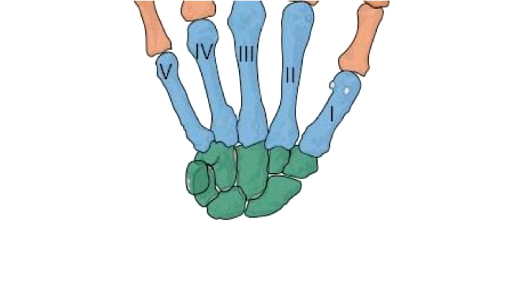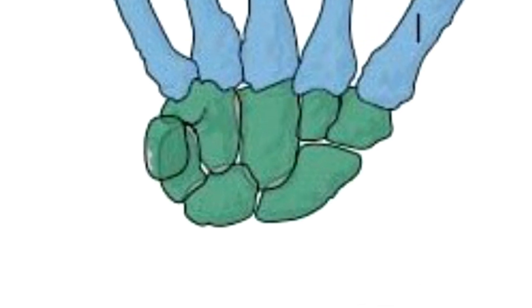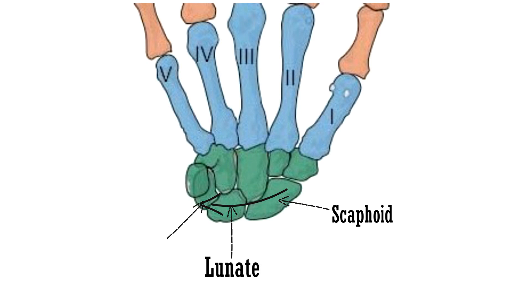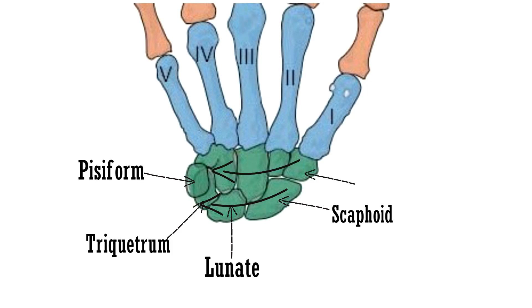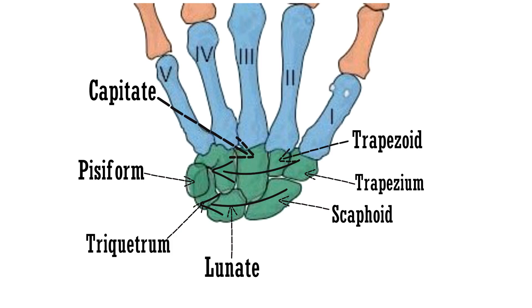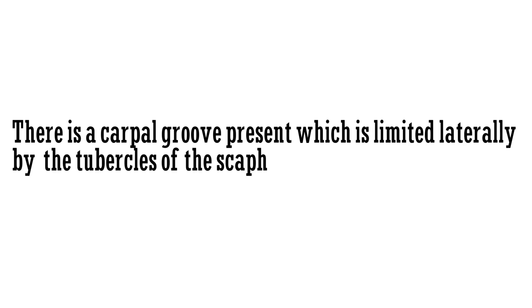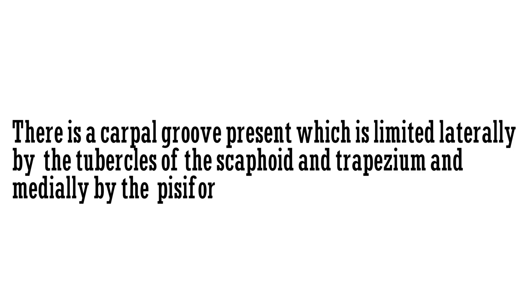Now let's have a look at these bones. The bones shaded in green are the carpal bones, arranged in 2 rows. In the proximal row: scaphoid, lunate, triquetrum, and pisiform. In the distal row: trapezium, trapezoid, capitate, and hamate, which has a hook called the hook of hamate. There is a carpal groove present, limited laterally by the tubercles of the scaphoid and trapezium, and medially by the pisiform and the hook of hamate.